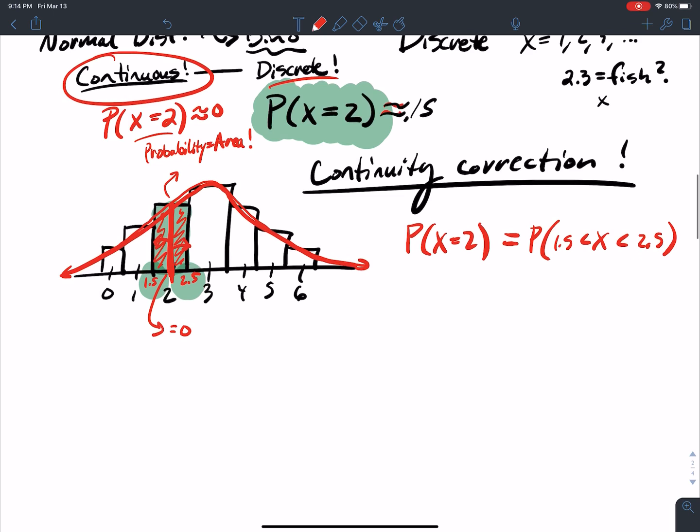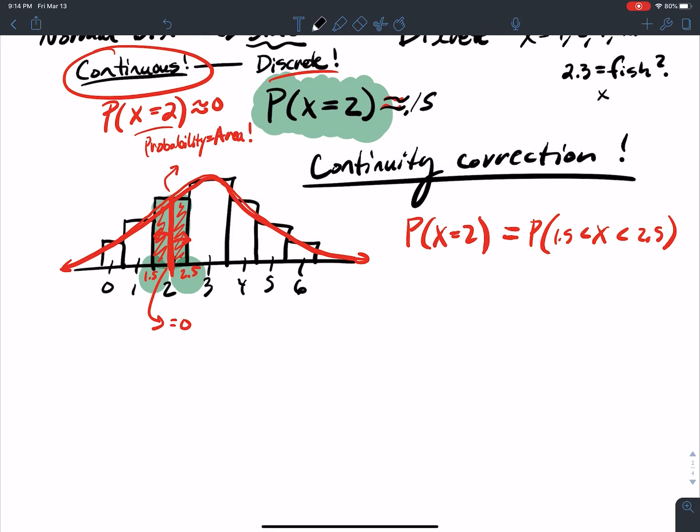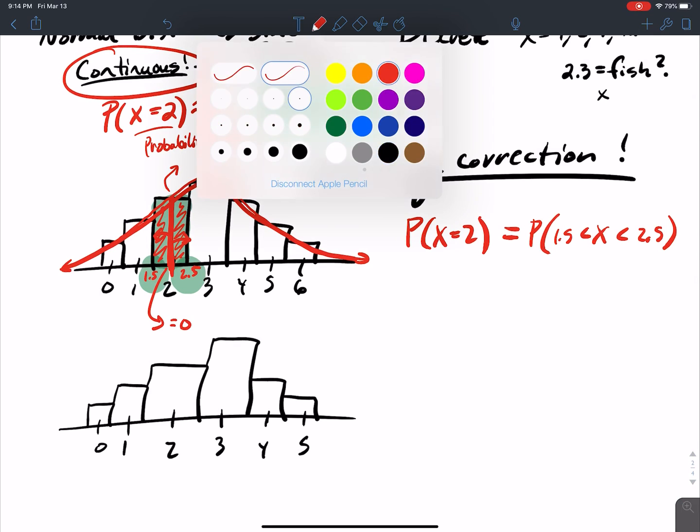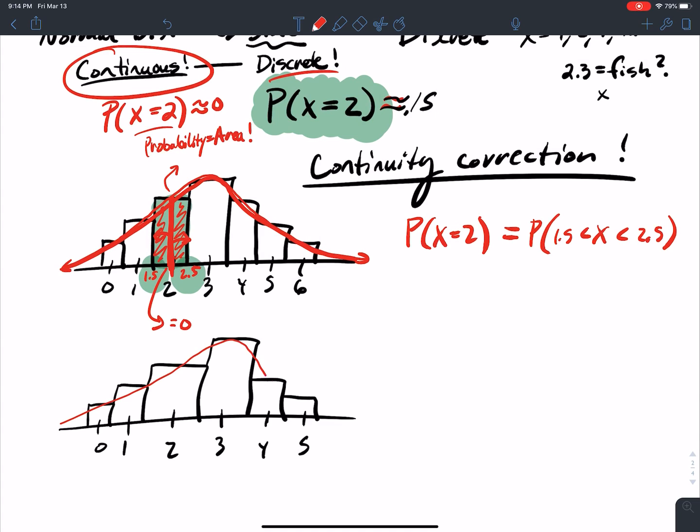Now say I have the same type of problem, and I have like a continuity correction. So 0, 1, 2, 3, 4, 5. Say I want to calculate the probability that x is less than or equal to 3. Well, what's less than or equal to 3? Those are all numbers that are smaller than 3 or equal to 3.